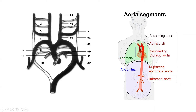The descending aorta will be formed by the fusion of the two dorsal aortas. The left half of the ventral aorta will form the arch of the aorta, and the right half will form the common carotid artery. Above the third arch, it will be forming the external carotid and internal carotid arteries.